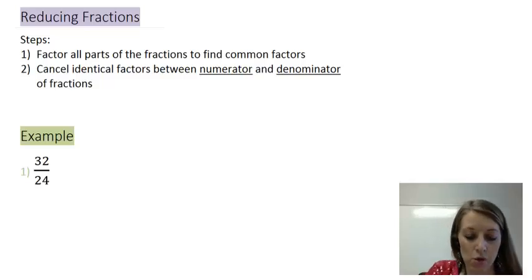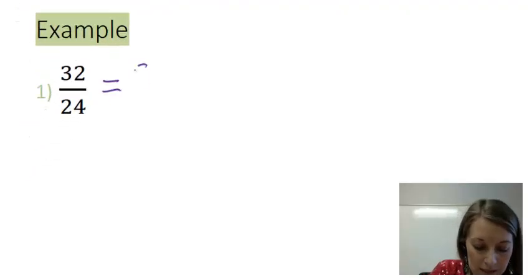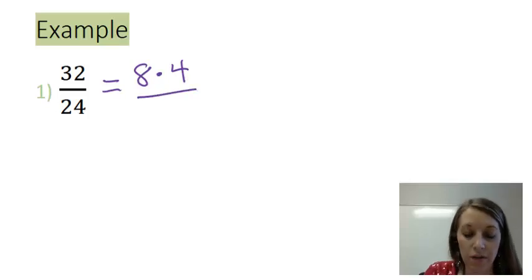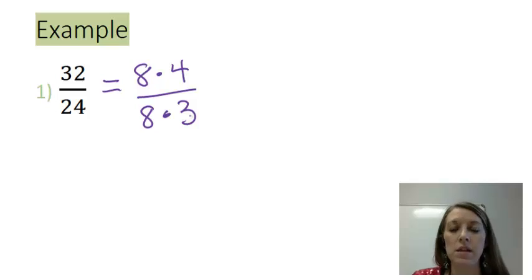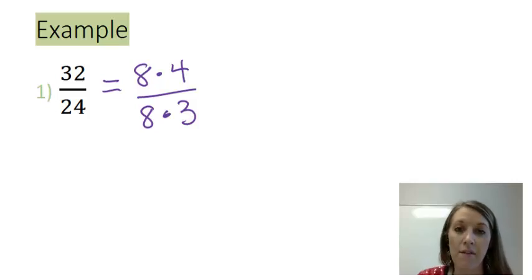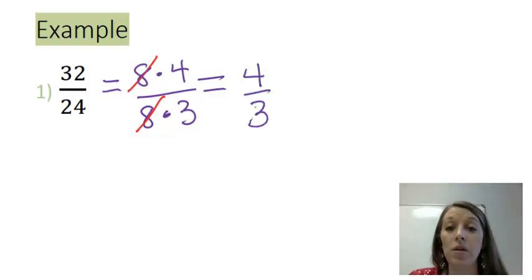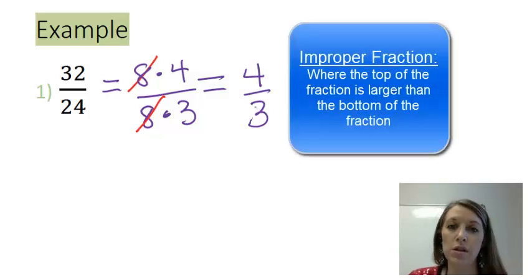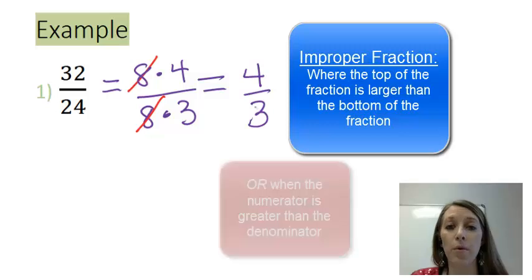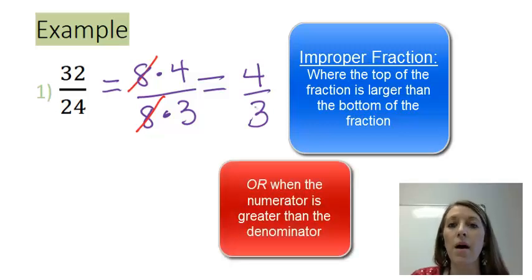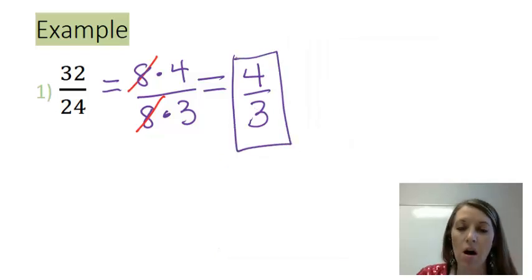In this example, the largest common factor is 8. So I'm going to write 32 as 8 times 4, and I'm going to write 24 as 8 times 3, so I can see their common factors. If you picked smaller factors first, that's perfectly fine — you might just have to do the simplification step a couple of times. Now that I see the common factor of 8, I can reduce both 8s, and I'm down to my final answer of 4 over 3. This is called an improper fraction because the numerator is larger than the denominator, but from here on out, that is okay — it's actually the preferred form. So 4 over 3 is our final answer.